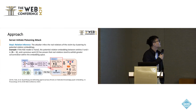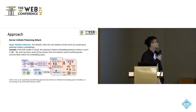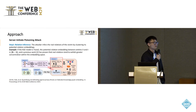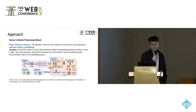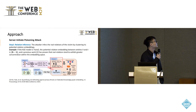For the approach, I first introduce the server-initiated poison attack, which has four steps. The first step is relation inference: the malicious server infers the real relation of the victim by clustering its potential relation embeddings. For example, if the KGE model is TransE, the potential relation embedding between entities H and T is the norm of H's embedding minus T's embedding. A previous work has proven that real relations tend to exhibit great concentration within the embedding space.